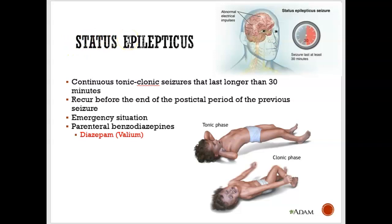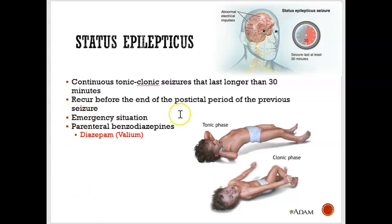Status epilepticus is when you have abnormal electrical impulses in your brain for more than 30 minutes — you are seizing for 30 minutes or more. This is an emergency situation and you need to be seen by a doctor as soon as possible. The type of medication usually used for this is diazepam, also known as Valium.